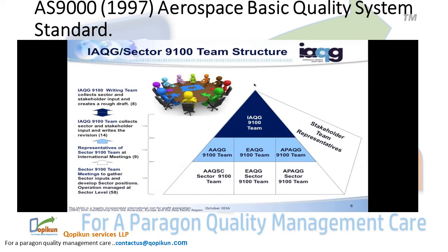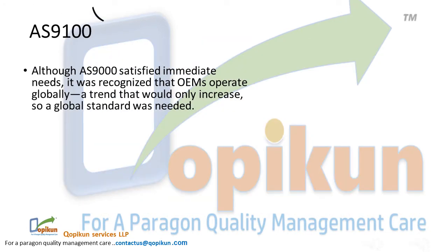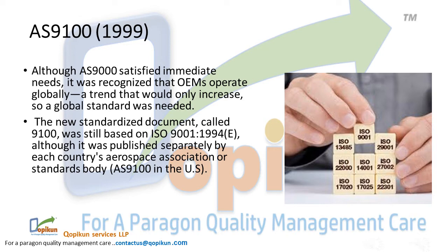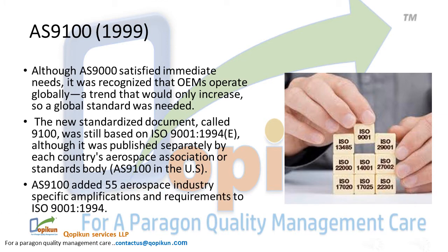AS9000 in 1999 satisfied immediate needs, but it was recognized that OEMs operate globally — a trend that would only increase — so a global standard was needed. The new standardized document, called 9100, was still based on ISO 9001:1994, although published separately by each country's Aerospace Association or Standards Body, as AS9100 in the US. AS9100 added 55 aerospace industry-specific amplifications and requirements to ISO 9001:1994.